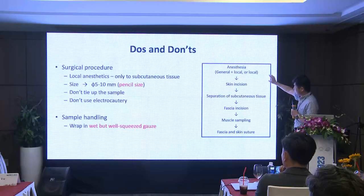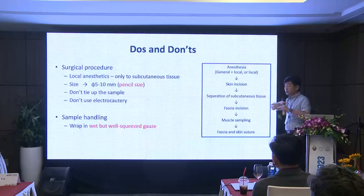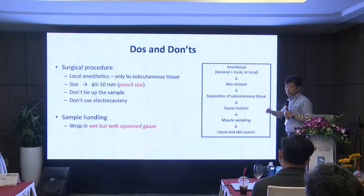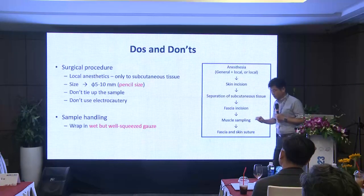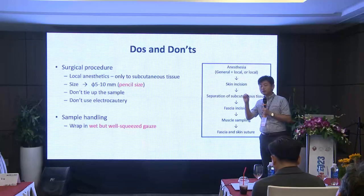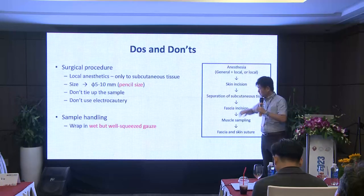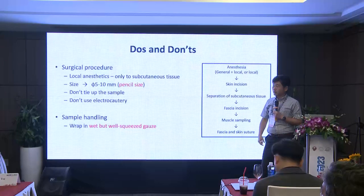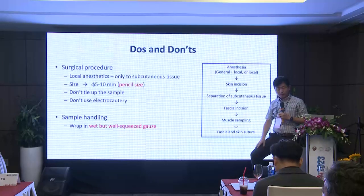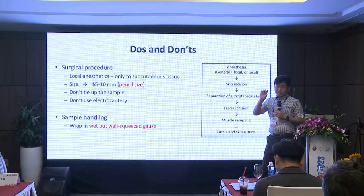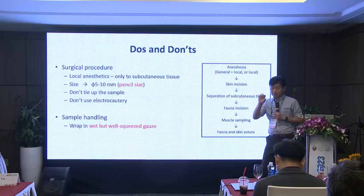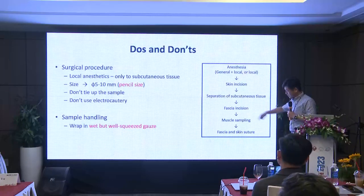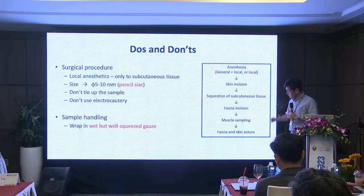When doing the biopsy, you do anesthesia, make a skin incision, and separate the subcutaneous tissue. This part varies depending on the patient — from a young boy with biceps the subcutaneous fat is very thin, so you almost immediately see the fascia. But from a relatively obese patient at the thigh level, the subcutaneous fat can be several centimeters. Once you reach the fascia, you make an incision, open it, take the muscle, and close.